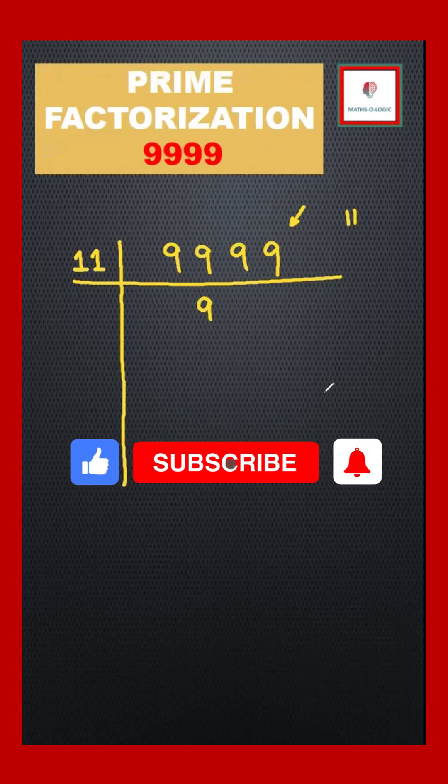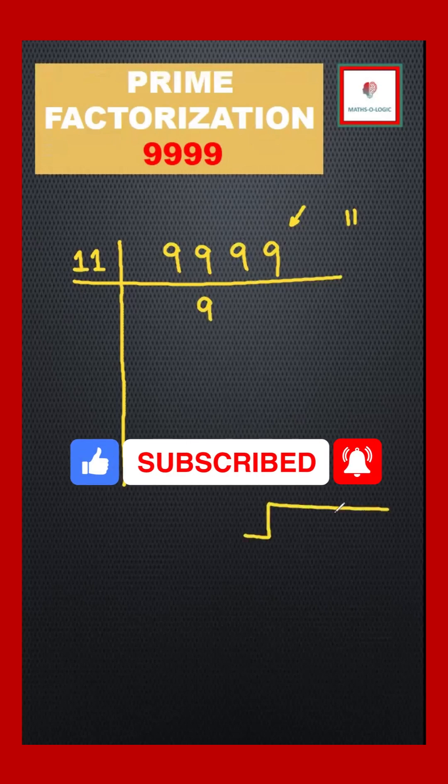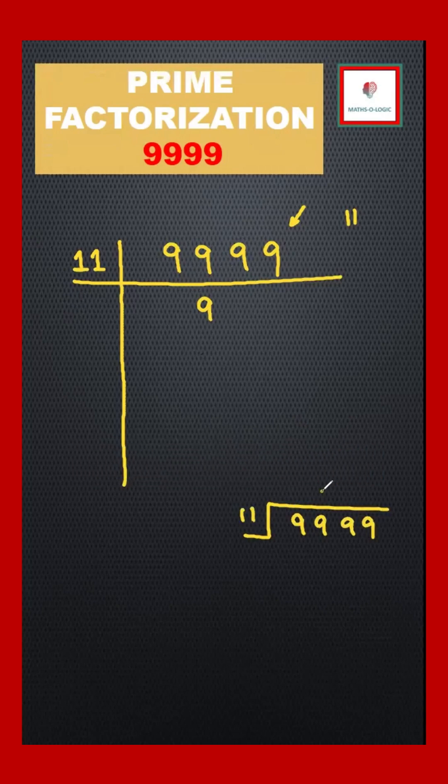I'll show you the division. 11 times 9 is 99, then I get 00. I'll carry down this 9, but 11 is greater than 9, so I put a 0 here and carry down this 9 again.